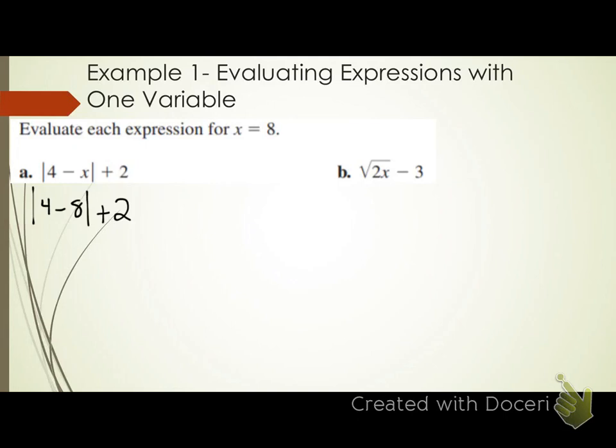What does the E stand for? Exponents. If you've got any exponents, you would do that after the grouping symbols. M stands for multiplication, D stands for division — we deal with multiplication and division together, from left to right. A is addition and S is subtraction. So we're going to use these orders of operations to simplify our expression.